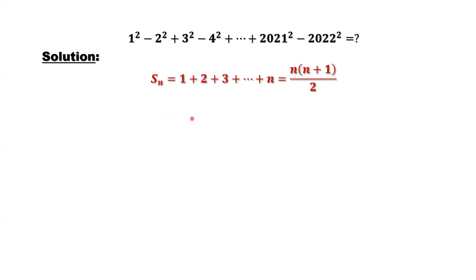The important formula we are going to use is this. The sum of first n natural numbers — we use Sn for the total sum until n — this is the formula: n times (n plus 1), then divide by 2. In case you don't know, here I'll give you a quick proof. It is very easy to understand the formula.